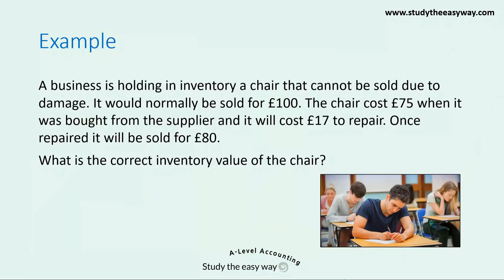Let's have a look at an example. A business is holding in inventory a chair that cannot be sold due to damage. It would normally be sold for £100. The chair cost £75 when it was bought from the supplier, and it will cost £17 to repair. Once repaired, it will be sold for £80. What is the correct inventory value of the chair? Questions like this can look quite confusing because there are lots of different numbers included in the information supplied, but if we follow a step-by-step process, it's actually straightforward to determine the correct inventory value.